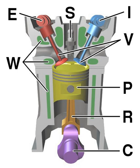A second class of internal combustion engines use continuous combustion: gas turbines, jet engines and most rocket engines, each of which are internal combustion engines on the same principle as previously described.